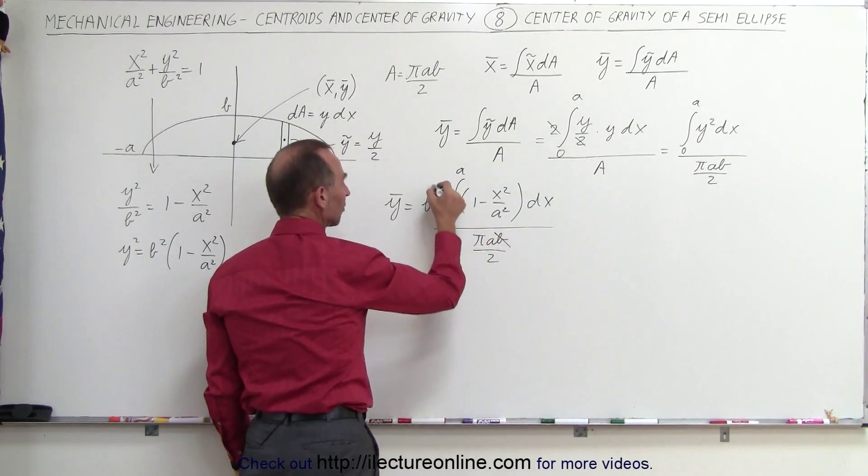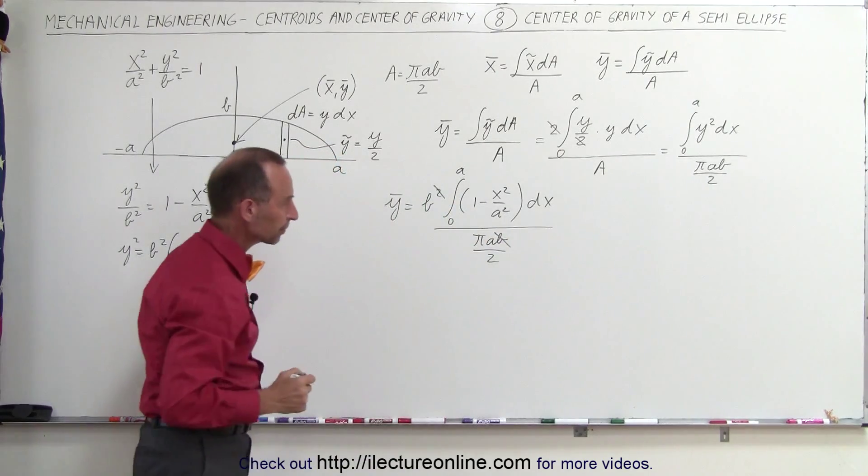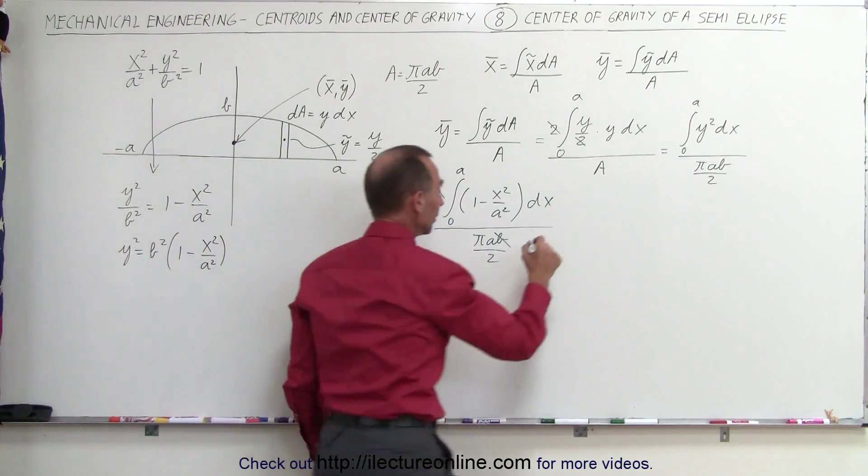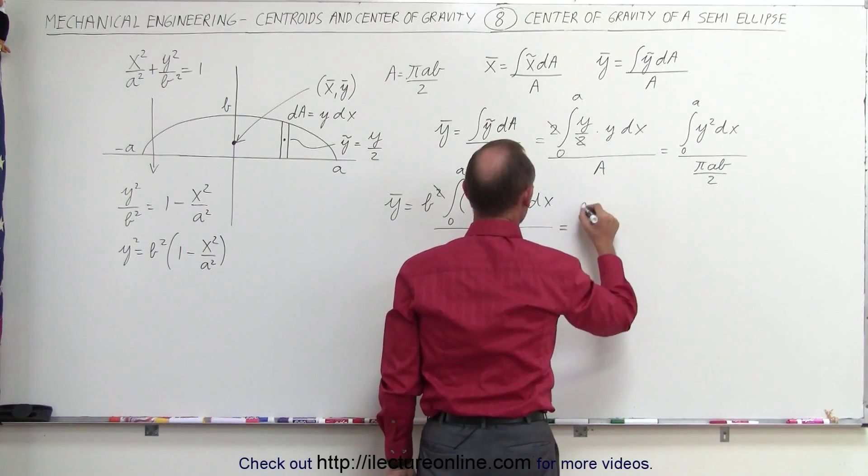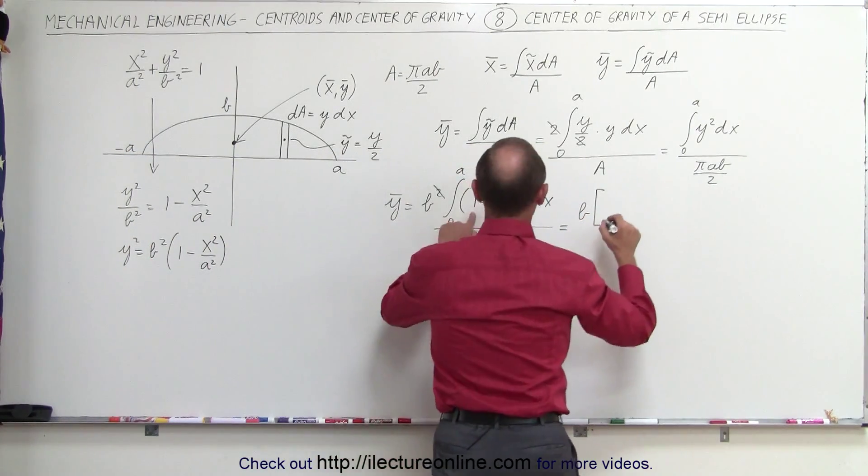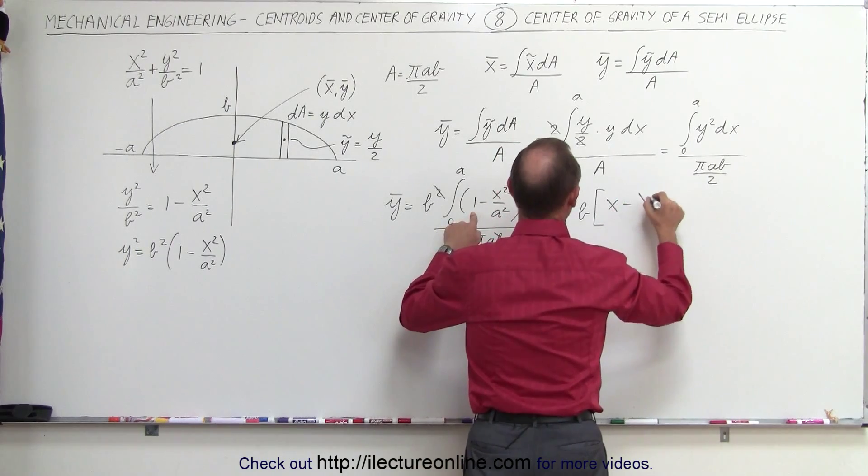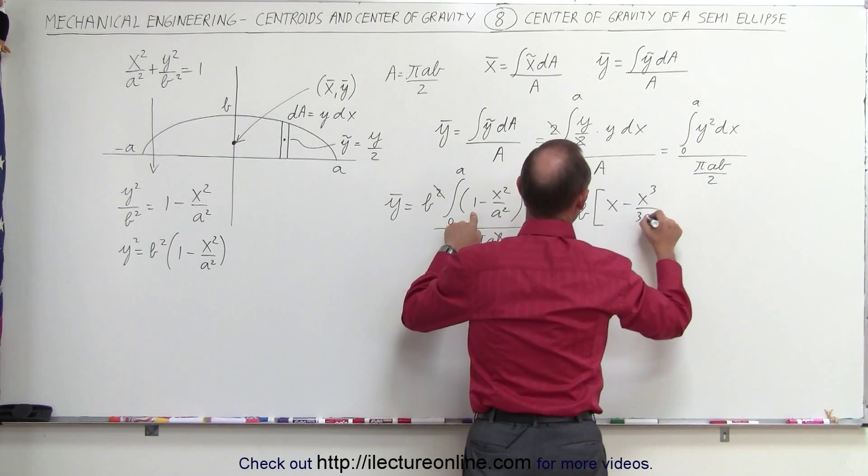Notice that this B will cancel out with one of those. Now we can go ahead and integrate. When we integrate, we get b times x minus x³ over 3a².